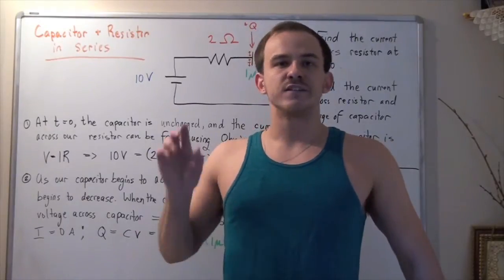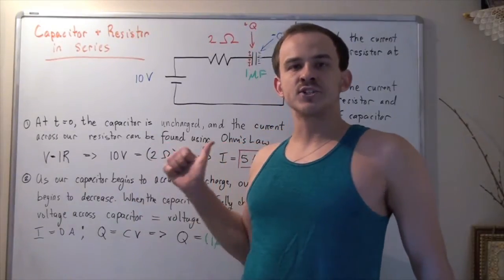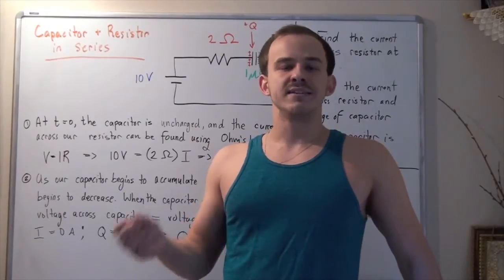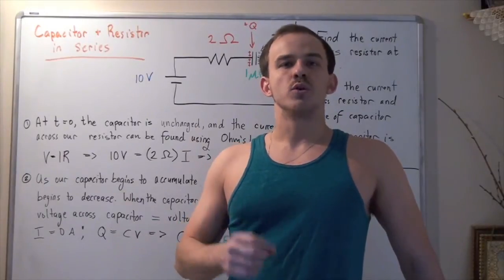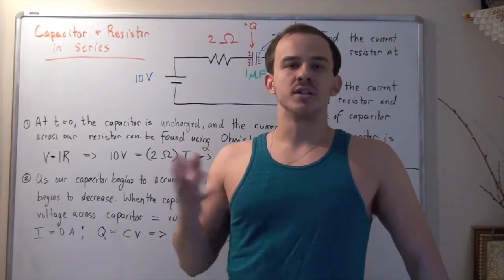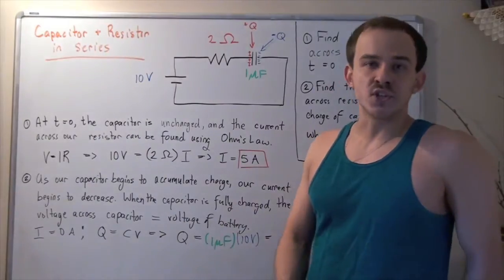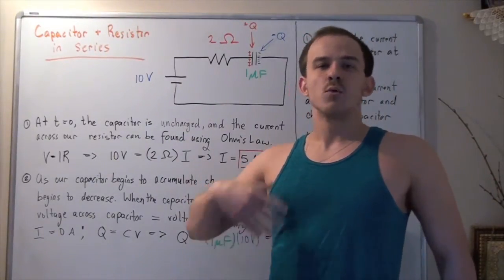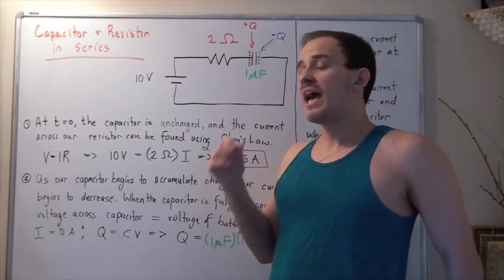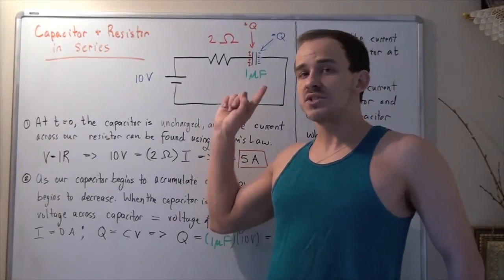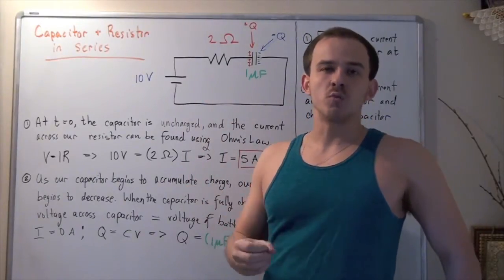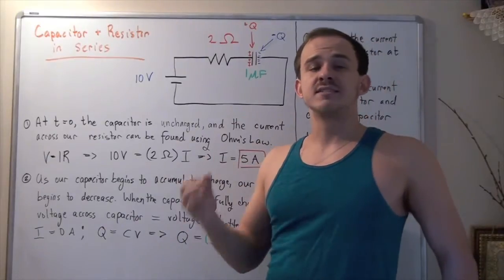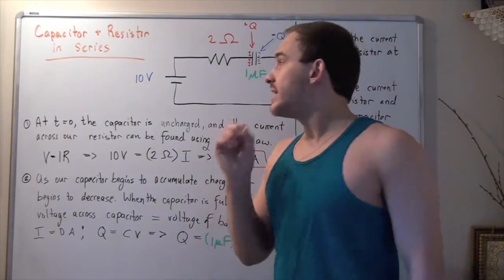In this example, we're going to look at the following electric circuit that has a capacitor and a resistor placed in series to one another. In this electric circuit, we have one battery with a voltage of 10 volts, one resistor with a resistance of 2 ohms, and one capacitor with a capacitance of 1 microfarad.